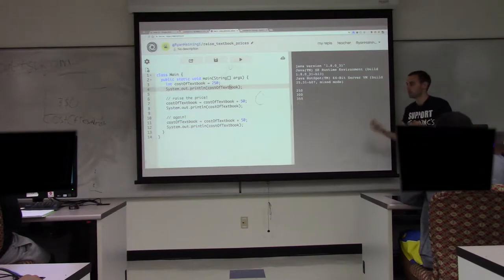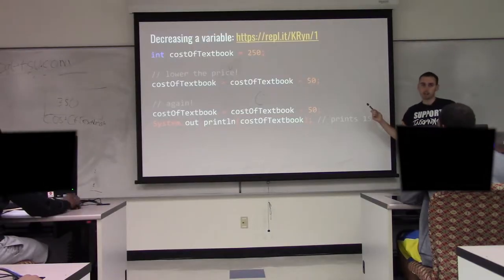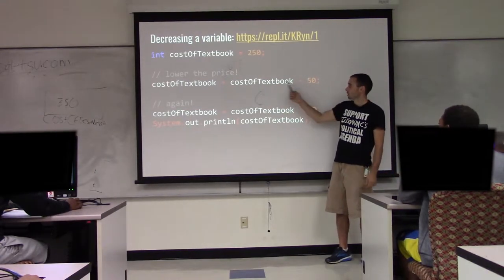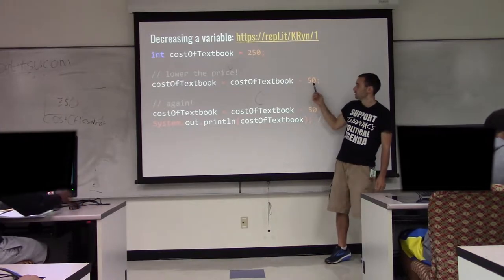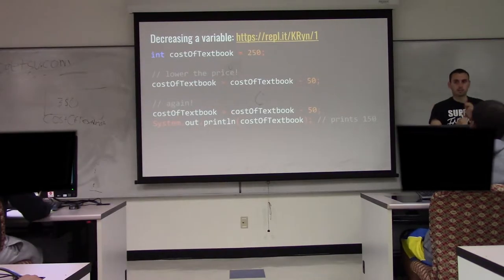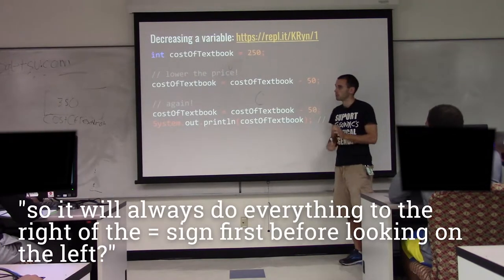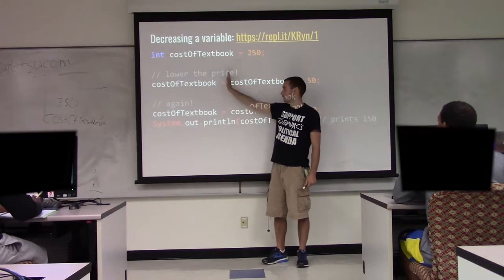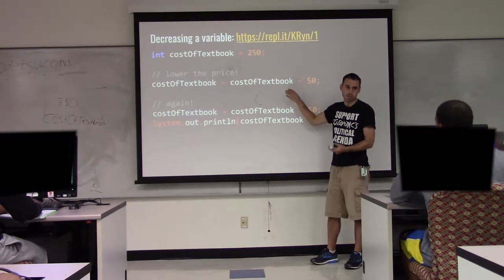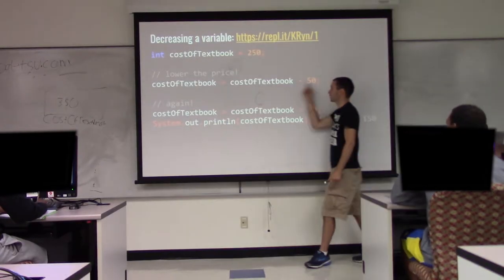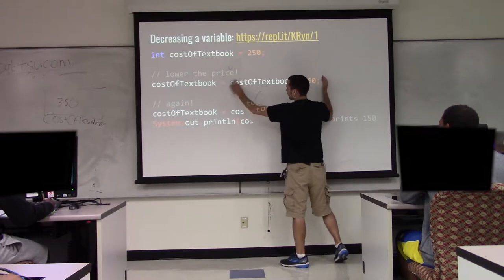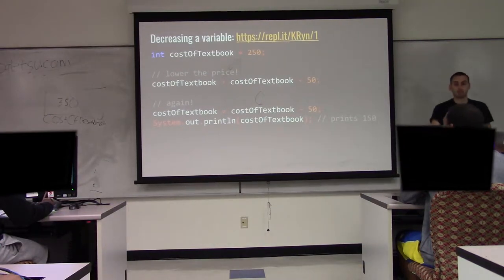You can use variables in terms of themselves — you don't have to put straight values into them. Likewise, we can do subtraction: the same thing except replacing additions with subtractions. So it goes 250, cost of textbook here is 250, minus 50 is 200. You can multiply by two, divide, or do modulus. There is an order of evaluation: when there's an equals on the line, everything to the right is evaluated first, then it assigns to the left.